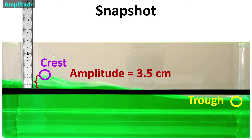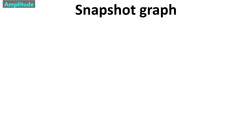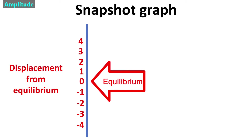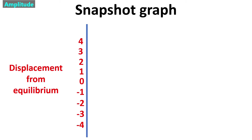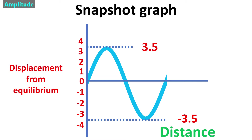Then we find the trough, which is the lowest point on the wave. We measure its distance from the equilibrium. This is the negative amplitude. For this water wave, the negative amplitude's value is negative 3.5 cm. To graph the snapshot, we first draw the y-axis to represent displacement from the equilibrium. A y-value of zero represents the equilibrium. Then we draw an x-axis, which represents distance. We find the value of the amplitude and negative amplitude and draw those in as dotted lines. Then we sketch the wave so that the crest and trough touch those dotted lines.